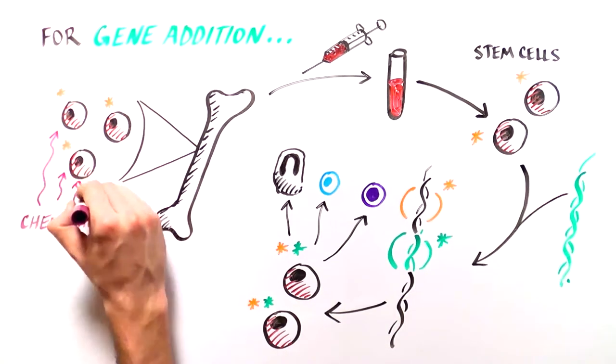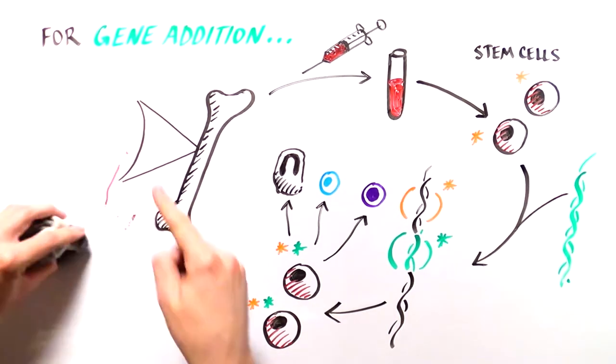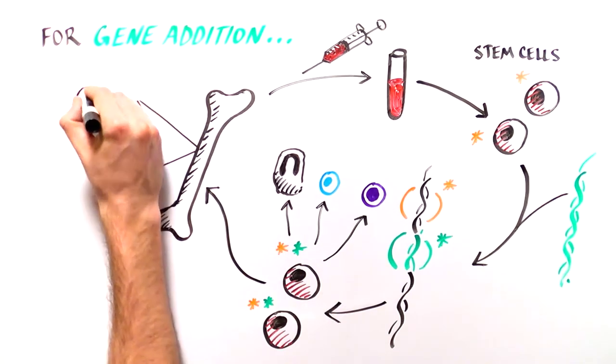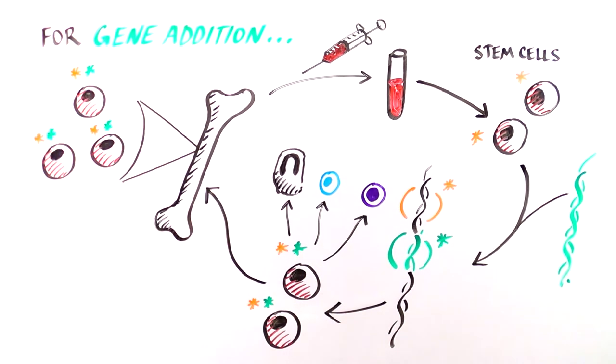Patients are given a low dose of chemotherapy to make space for the new cells, and then the repaired HSCs are transplanted.